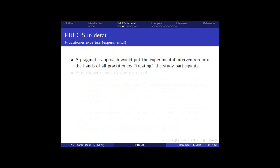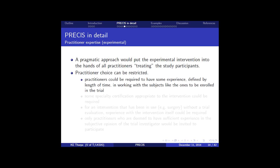Next, we're talking about the expertise of those giving the intervention, the experimental intervention. The pragmatic approach is to put it in the hands of anyone who's going to be treating patients like those you're targeting in the study. Practitioner choice can be restricted. You might restrict it to those who have some experience with the intervention. Length of time working on subjects like the ones enrolled in the trial. If it's a surgical intervention, for example, they might have to do a certain number of surgeries.